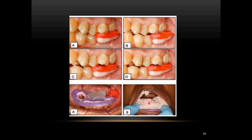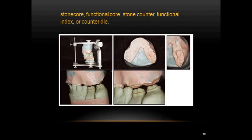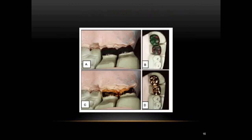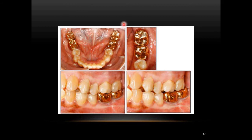Fast-setting stone was applied completely over the stone crib and the functional record. Once set, it was carefully removed along with the stone crib and mounted onto the articulator. The functional core — also called the stone core, stone counter, functional index, or counter die — defines the area to be restored. Wax-up was performed against this functional core, and gold crowns were fabricated and cemented for the lower posterior teeth as the final restoration.